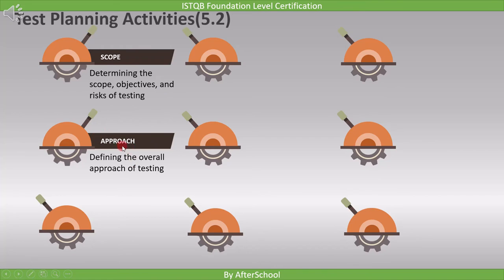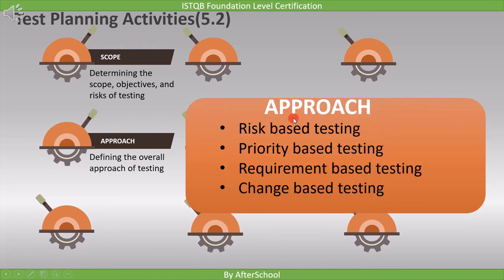The second task in test planning is defining the overall approach of testing. Since testing is context dependent, we decide which approach to use based on what we test. For example, we can go for risk-based testing if the release is critical to the customer, priority-based testing to ensure critical features are tested early so bugs can be fixed, requirement-based testing to ensure all requirements are tested before release, or change-related testing to ensure all changed features are tested before release.